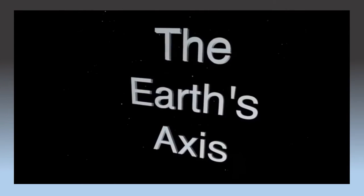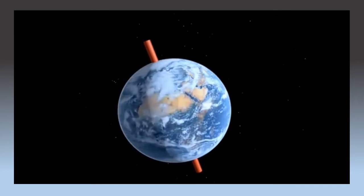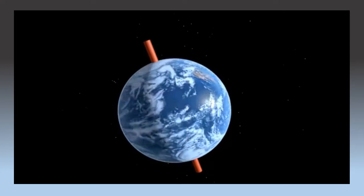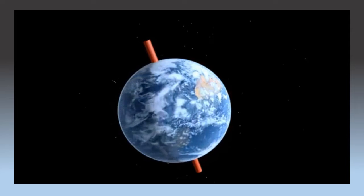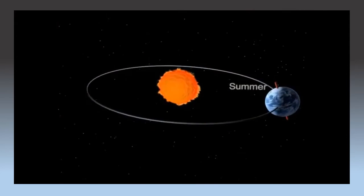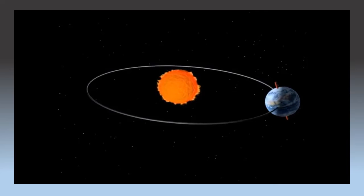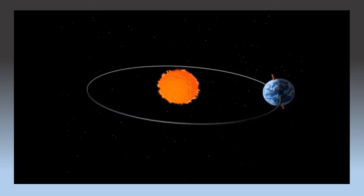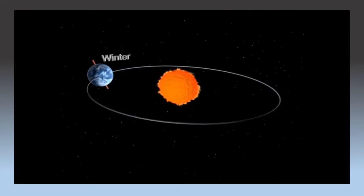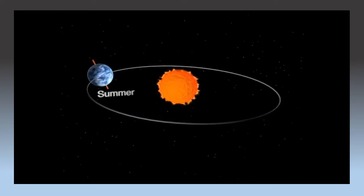Here is an animated video describing the earth's rotation and revolution. The earth's axis is slightly tilted at 23.5 degrees. The earth rotates on its axis — this movement is known as rotation, and the rotation of the earth causes day and night. The movement of the earth around the sun is known as revolution. The earth completes one revolution in 365 days. The revolution of the earth causes the different seasons we experience — winter, summer, autumn and spring.